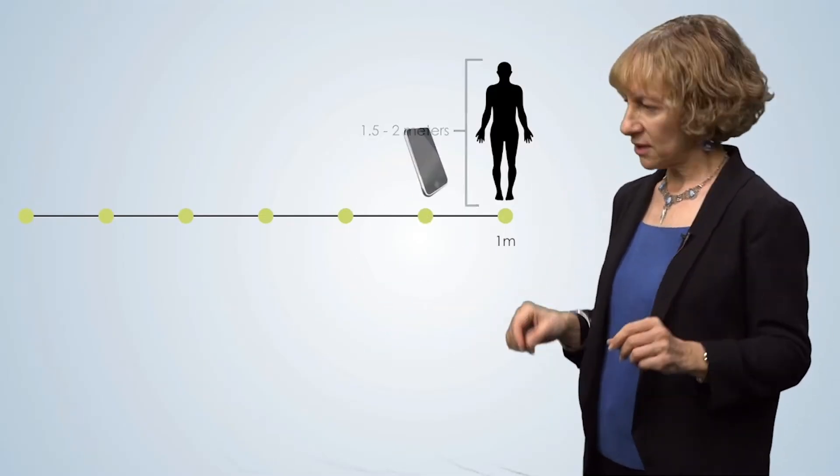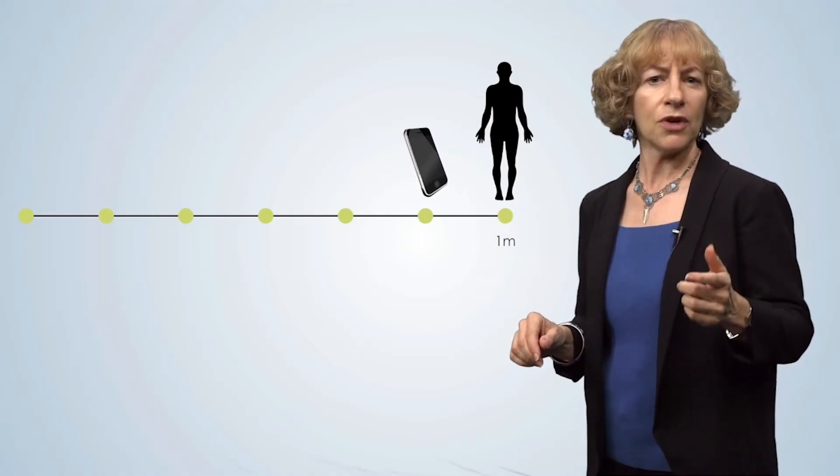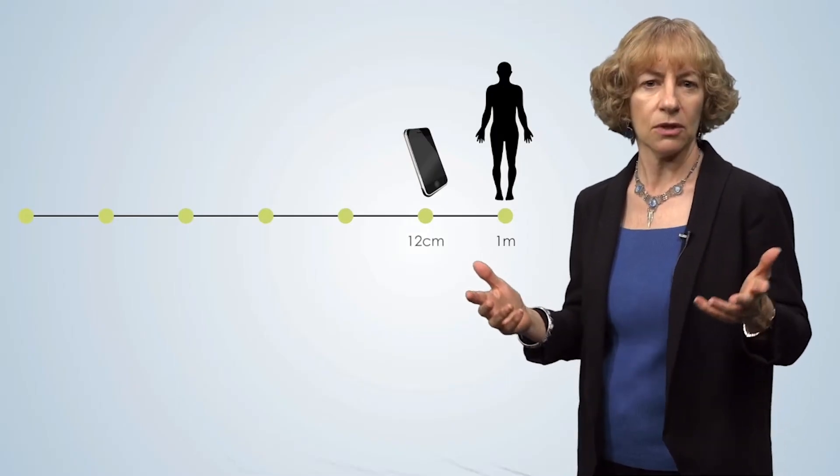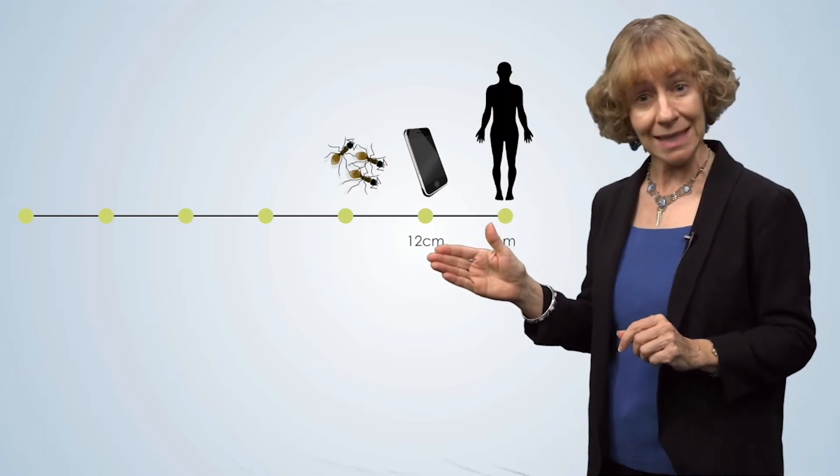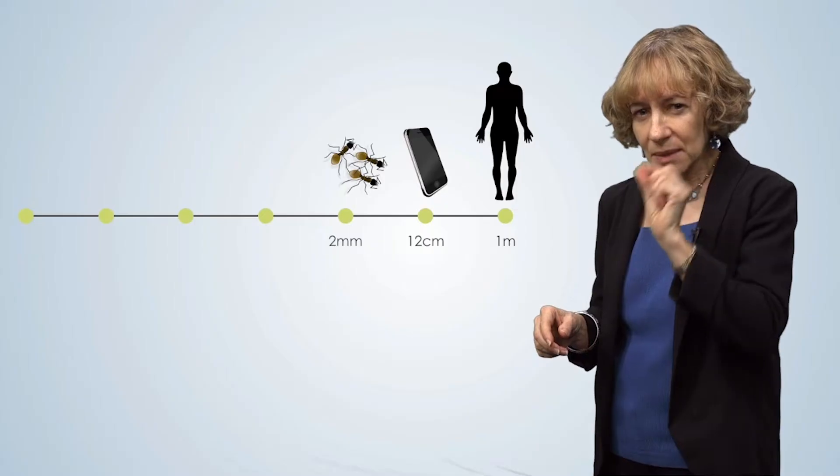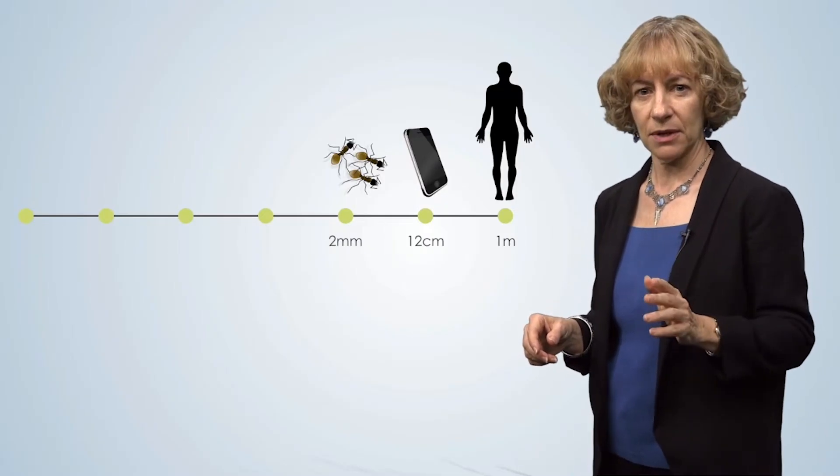Now let's move to the left along the scale bar and consider smaller objects. A mobile phone is about 0.12 meters long, or 12 centimeters long. Continuing on to smaller objects are insects, such as ants. These ants are about two millimeters long, so we're now at the millimeter scale, or 1 one-thousandth of a meter.